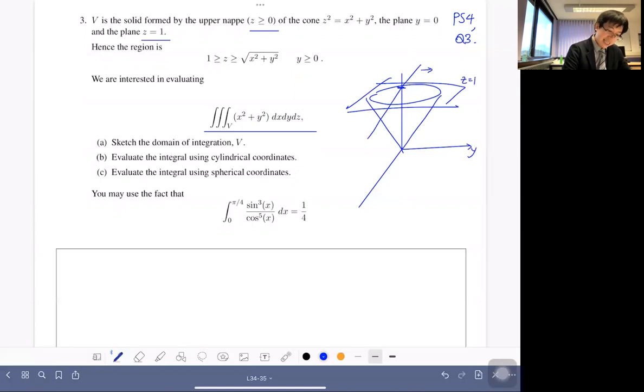I want this half of the cone. It's hard to draw in 3D. Yep. So it's this half of the cone. So y is larger than zero.